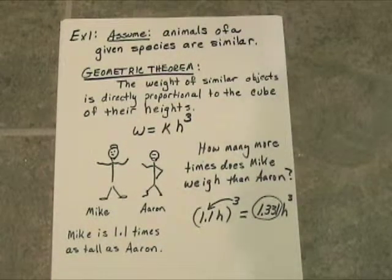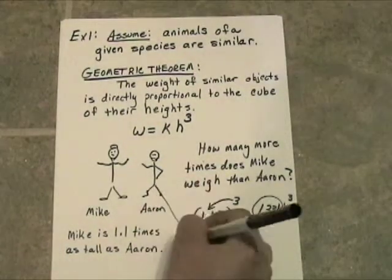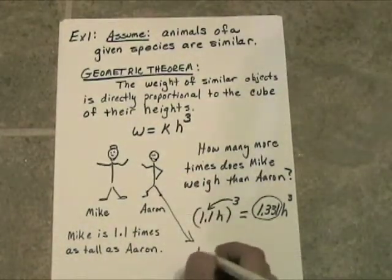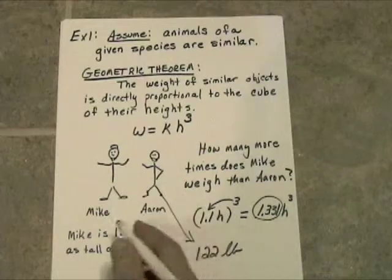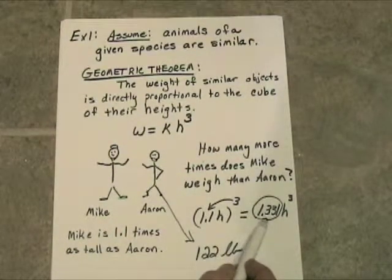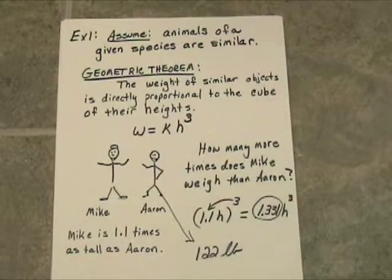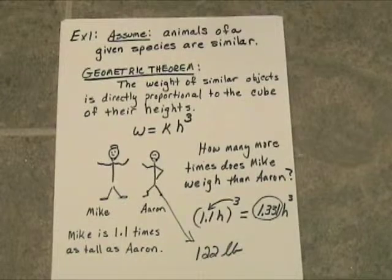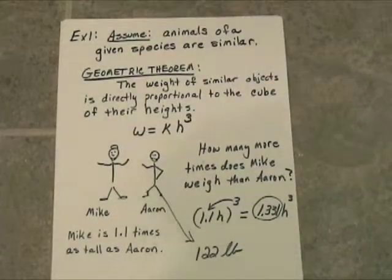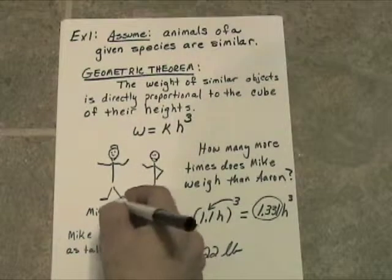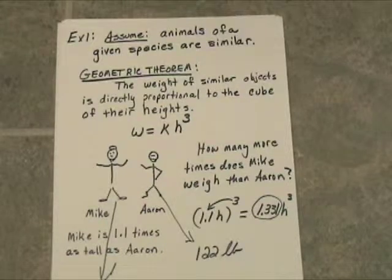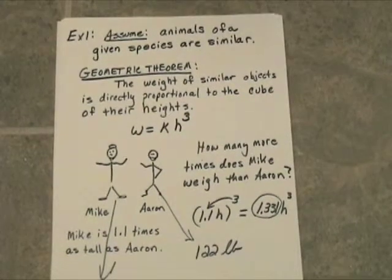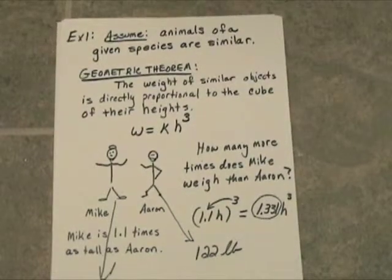Let's say Aaron weighs 122 pounds. How much will Mike weigh? We just look at the multiplication factor — we multiply by 1.331 and we get 162.382 pounds.